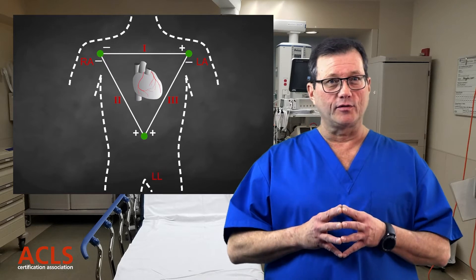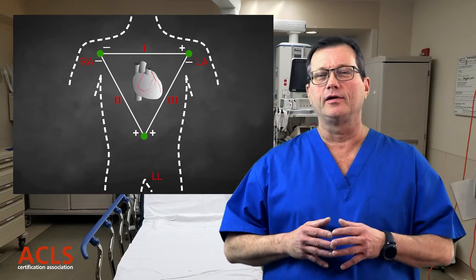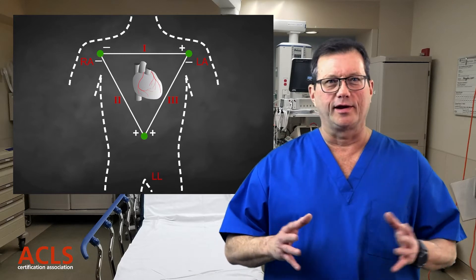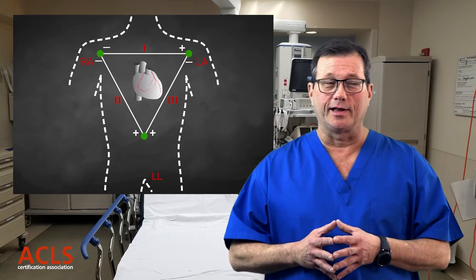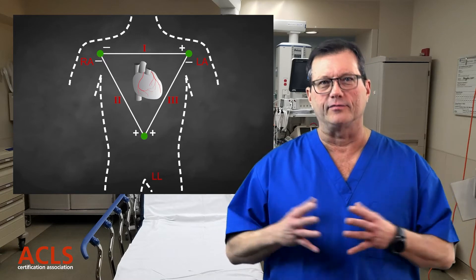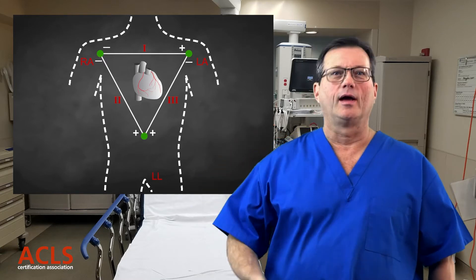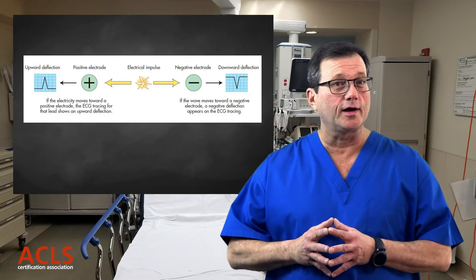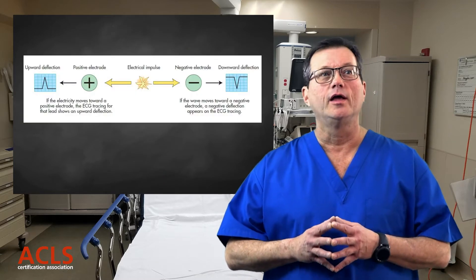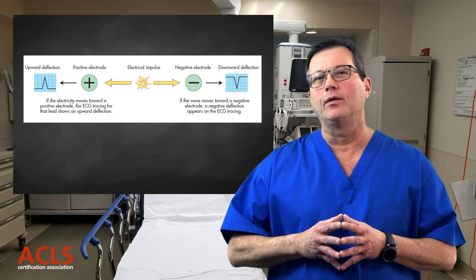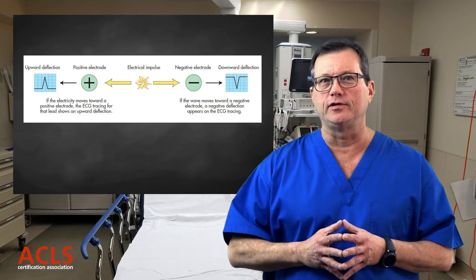To help us understand conduction through the heart and how tracings occur on ECG paper, I want to talk about something I call Einthoven's P-Wave. We start with Einthoven's triangle. In Einthoven's triangle, you have to remember that the right shoulder is negative, negative. Left foot is positive, positive. Any time the electrical conduction in the heart is moving toward a positive electrode, it will create an upward deflection on your ECG tracing.